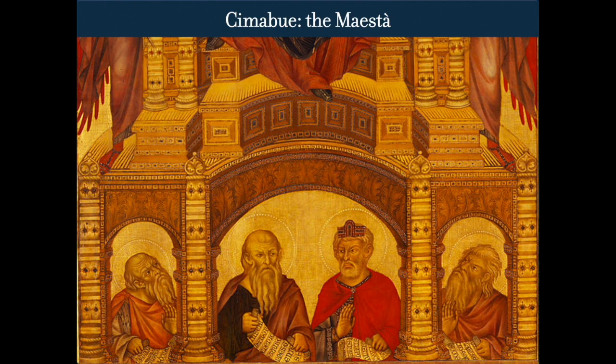The figures start to show a little more emotion — the prophets are kind of looking at each other. Some things aren't exactly perfect — the perspective isn't perfect — but we're starting to see what in art terms is called 'violating a boundary.' There's a step and the foot is supposed to stay on the step, but that foot is moving forward, giving us the impression of three-dimensional space. They haven't quite figured out perspective yet but they're starting to play with it.